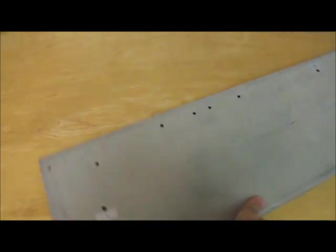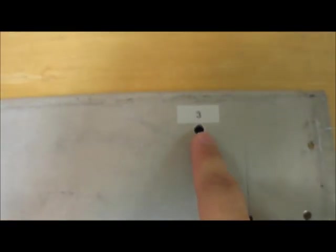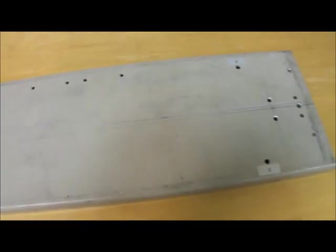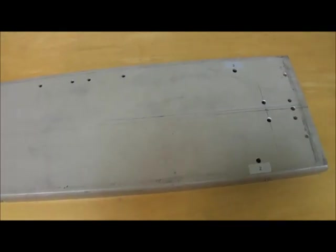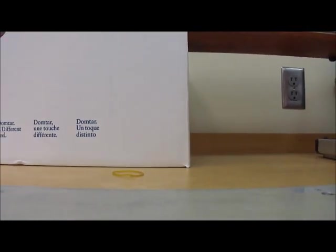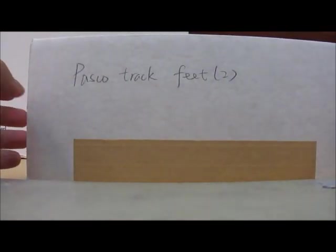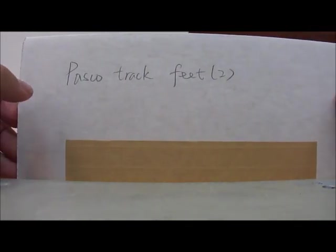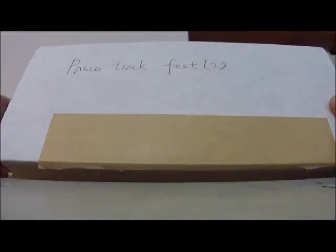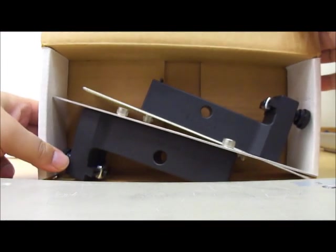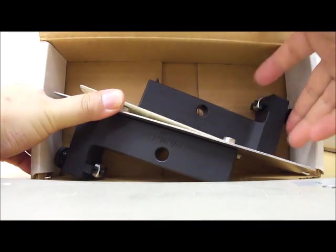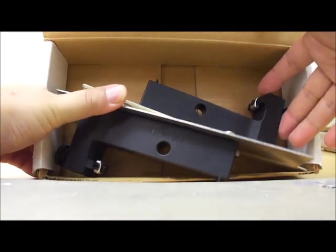Turn this around so you can see number one here. This is number one hole on the left, and also on the right, number two hole and number three hole. Now I'm going to bring the boxes over and take a look at the content. This one is the Pasco feet. These are the two feet that are going to be mounted on the Pasco track. I'll set it aside first.